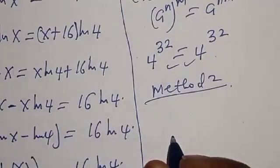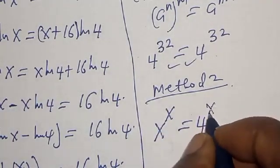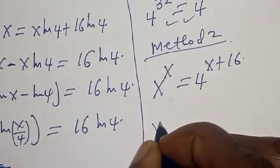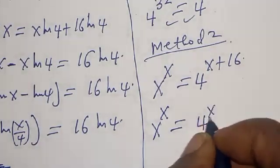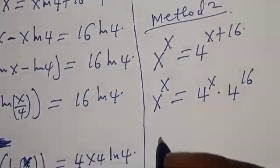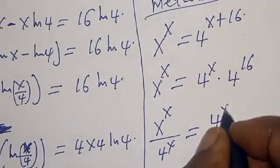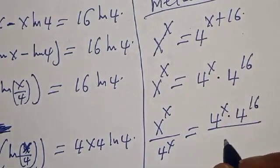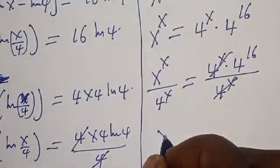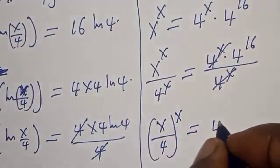Now for Method Two. We have the given equation s raised to power s is equal to 4 raised to power s plus 16. We rewrite the right side: 4 raised to power s multiplied by 4 raised to power 16. Now divide both sides by 4 raised to power s: the left side becomes s raised to power s over 4 raised to power s, and the right side equals 4 raised to power 16.